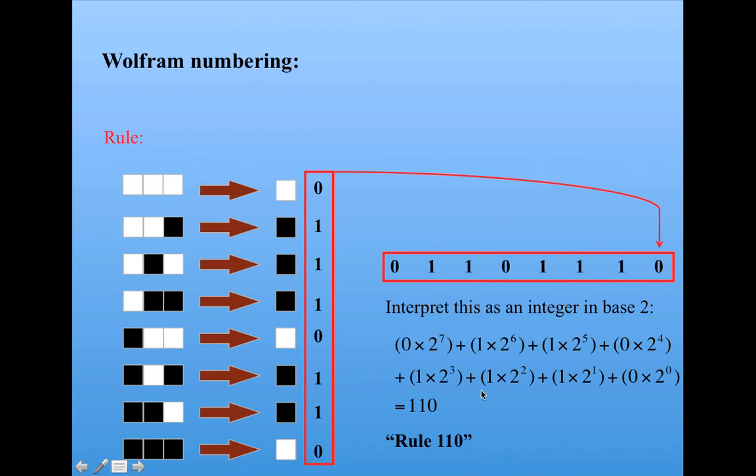So here we have 0 times 2 to the 7th, 1 times 2 to the 6th, and so on. This is just the normal way in which you would encode a string of 1s and 0s as an integer in base 2. If you multiply that out, you'll get that this is 110 in decimal. And Wolfram would call this rule 110.